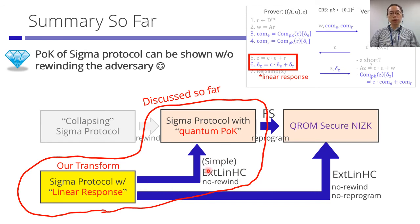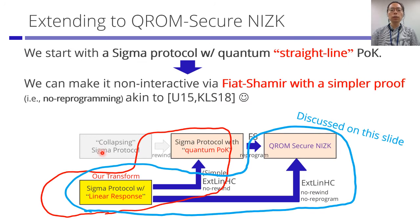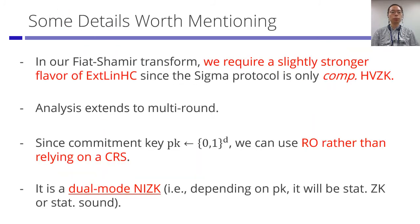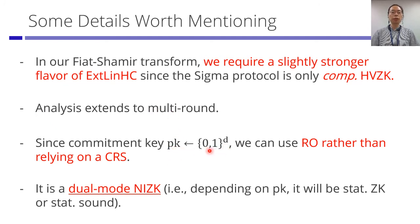In summary, using this simple extractable linear HC, we can get a sigma protocol with a quantum proof of knowledge. Extending this to a QROM-secure NIZK setting follows very naturally from previous results. In our Fiat-Shamir transform, we require a slightly stronger flavor of extractable linear HC because the sigma protocol only has computational honest-verifier zero-knowledge. The analysis extends easily to multi-round protocols. Since the commitment key is a random binary string, we can use the random oracle to output the public key in the real protocol rather than relying on a common reference string. Also, our NIZK is actually dual-mode: depending on the public key used, it will be statistically sound or statistically zero-knowledge.